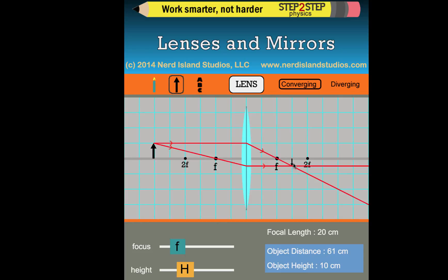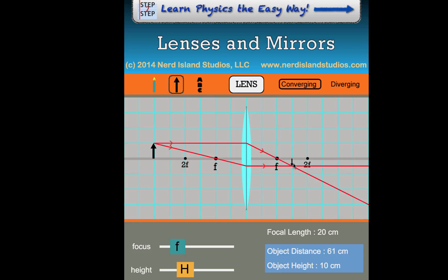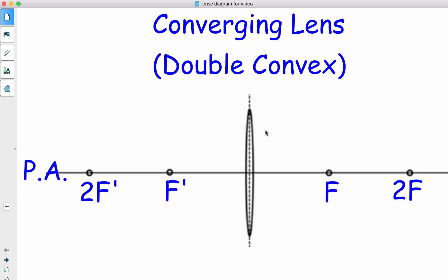We get a ray diagram which is showing that the image is on the opposite side. And because a lens is designed to have light going from one side to the other, this would be a real image on the other side. Now on to our ray diagrams. So this is the converging lens, sometimes called the double convex.